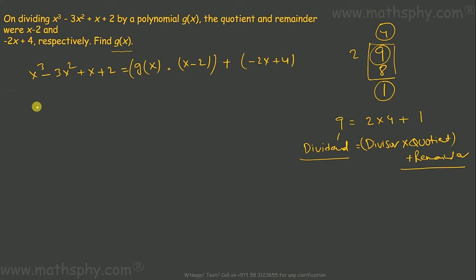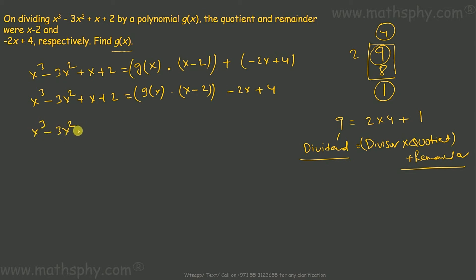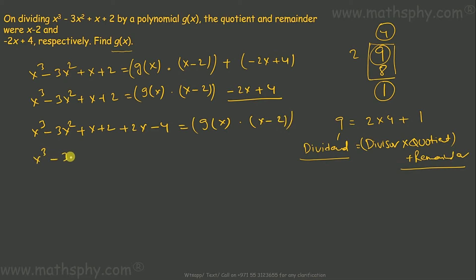So let's solve this equation. x cubed minus 3x squared plus x plus 2 minus the remainder (negative 2x plus 4) gives us x cubed minus 3x squared plus 3x minus 2, which equals divisor times x minus 2.